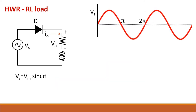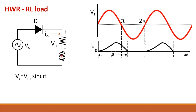Let us see the half-wave rectifier with RL load. The property of inductance is to limit the rate of change of current, meaning the current through the inductor cannot increase in proportion to the voltage — it increases gradually. So in this diode rectifier, when the supply voltage is positive, the diode is forward biased and starts to conduct, so I naught flows through the RL load. The output current increases gradually, then becomes zero at a point denoted by beta.